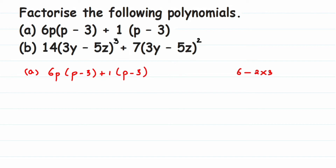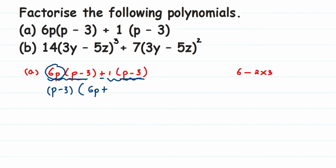In this question you can see that (p - 3) and (p - 3) is common. Apart from that, nothing else is common. So I'm going to take (p - 3) as the common factor and pull it outside. From the first term, 6p is left. From the second term, 1 is left. So I write (p - 3) into (6p + 1).